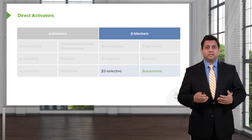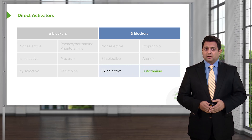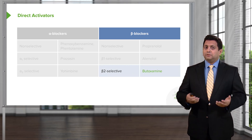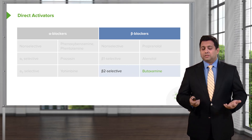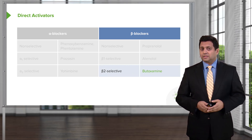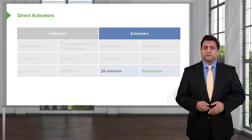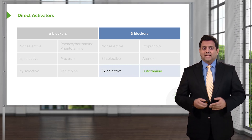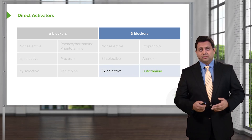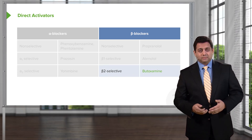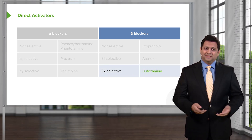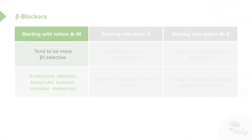The beta-2 selective beta blocker is butoxamine, which is almost never used clinically, but it's important for research and it is the prototypical drug, so you do need to know it.